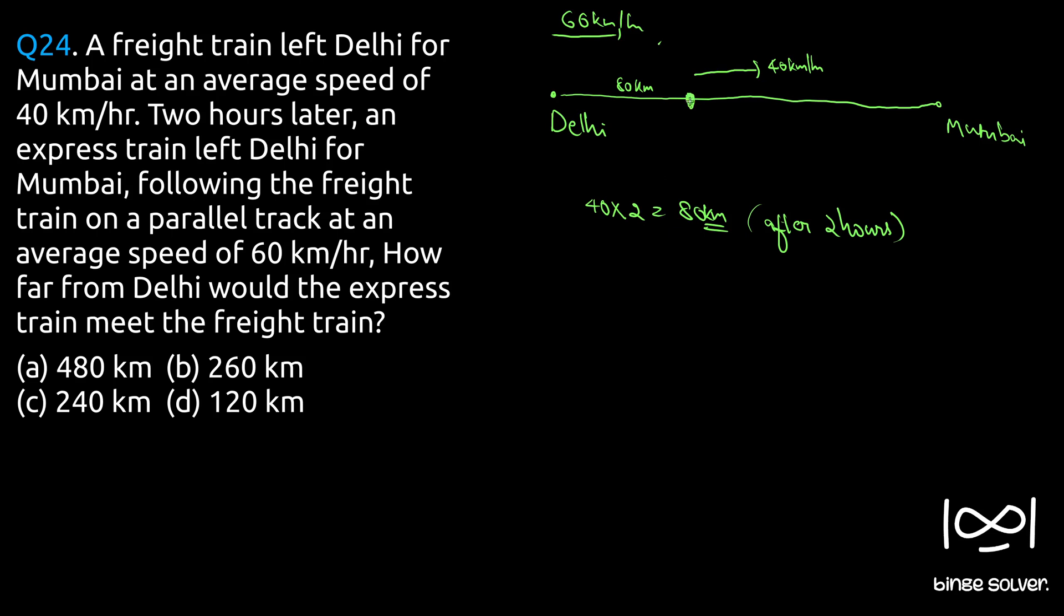So if you know the relative speed it is fairly simple. We will assume the freight train is stationary and the new train is traveling at a relative speed. So relative speed when they are moving in the same direction will be V1 minus V2, or 60 minus 40, which is 20 km per hour.